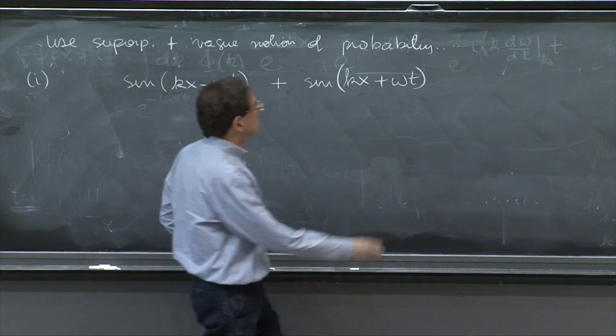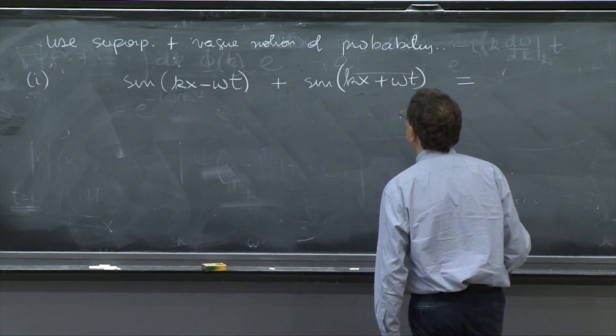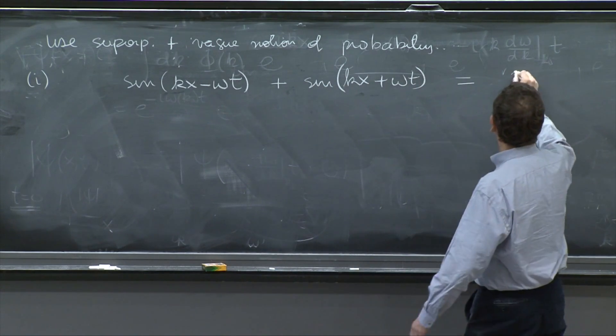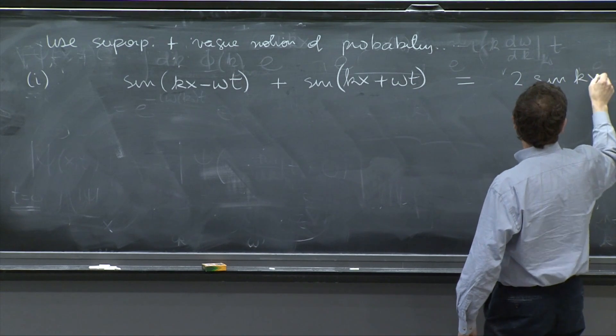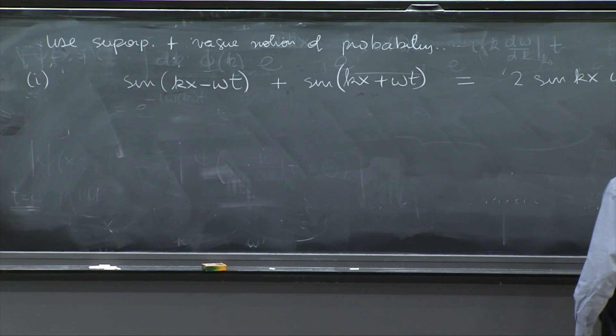On the other hand, if I expand this, you get twice sine of kx cosine omega t.